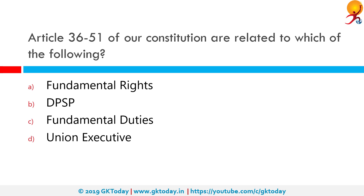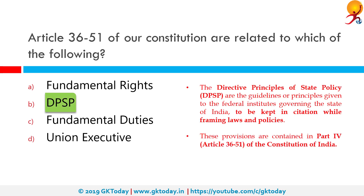Articles 36 to 51 of our constitution are related to which of the following? The correct answer is Directive Principles of State Policy, which are the guidelines or principles given to the federal institutes governing the state of India to be kept in consideration while framing laws and policies. These provisions contained in Part 4 of the Constitution of India are not enforceable by any court, but the principles laid therein are considered irrefutable in the governance of the country, making it the duty of the state to apply these principles in making laws to establish a just society. The principles have been inspired by the directive principles given in the Constitution of Ireland relating to social justice, economic welfare, foreign policy, and legal and administrative matters.